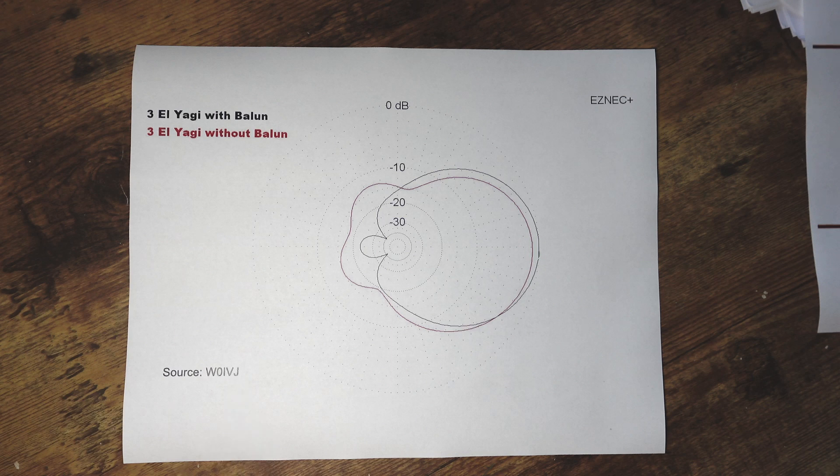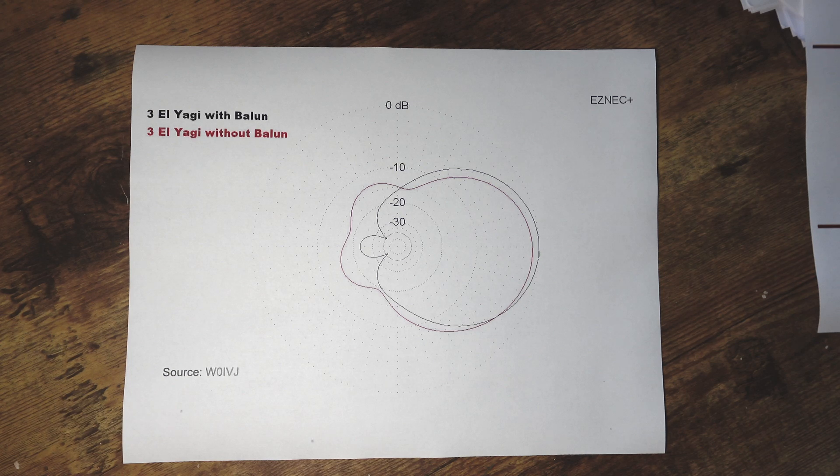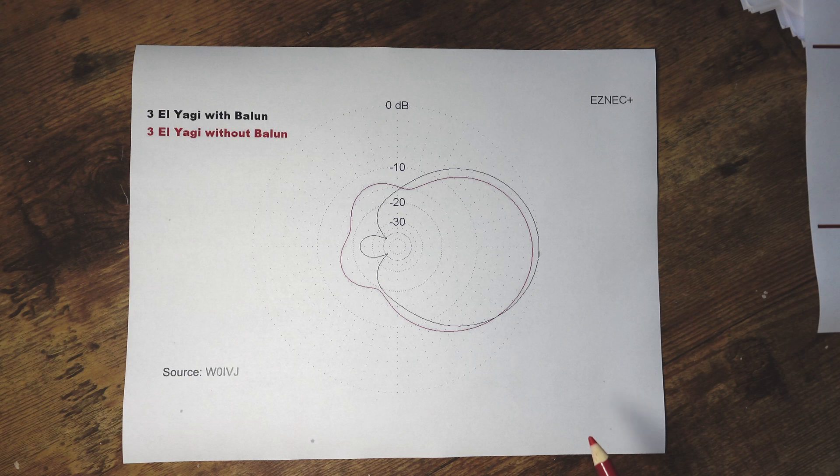W0IVJ was kind enough to allow me to use some of his simulations here and you can look him up if you're interested in more information. But what he did is he took a three element Yagi and he simulated it with and without a Balun.